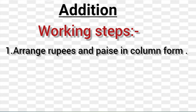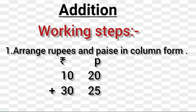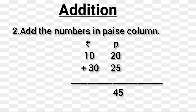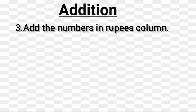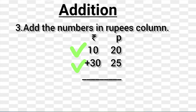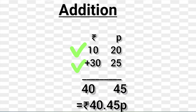Step 1: Arrange rupees and paise in column form. Step 2: Add the numbers in the paise column — that is 20 plus 25 equal 45. Step 3: Add the numbers in the rupees column — that means 10 plus 30 equal 40. At last, we get 40 rupees and 45 paise.